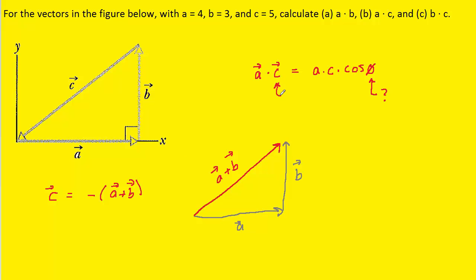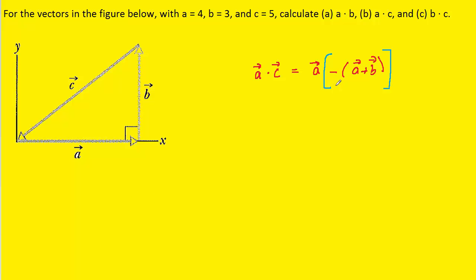So we've gone ahead and made that substitution for vector C. And then what we can do is actually distribute this minus sign to both vector A and vector B. We could then actually distribute vector A into the parentheses.